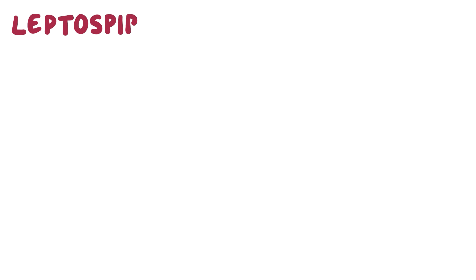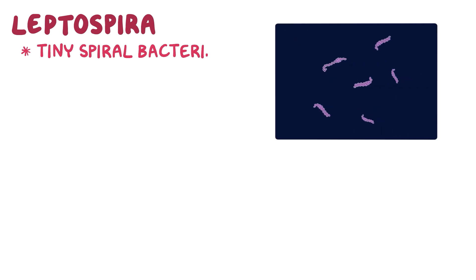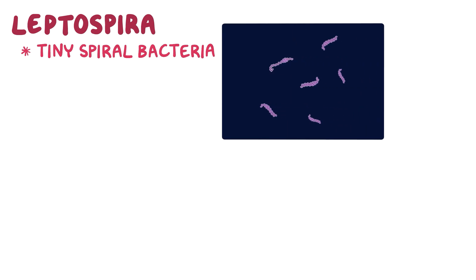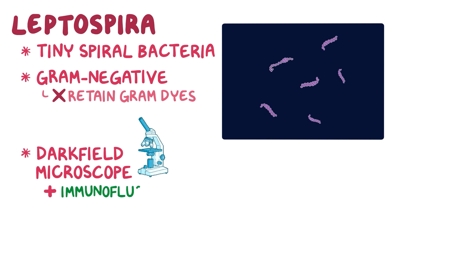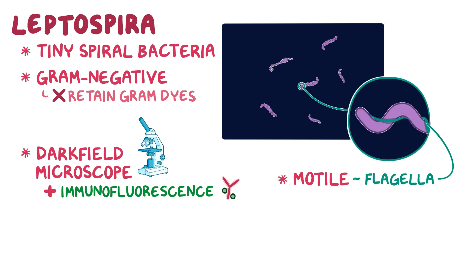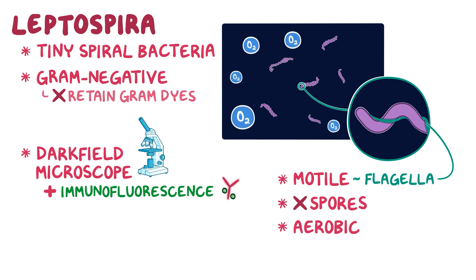Leptospira is a tiny spiral bacteria that stains poorly with gram staining because it doesn't retain the gram dyes well, so it's classically considered gram negative. It's also too tiny to be seen with a light microscope, so you need a dark field microscope with the use of immunofluorescence. Leptospira is also a modal bacteria because it has a flagella that helps it move around. Finally, it doesn't form spores and it's aerobic, meaning it needs oxygen to grow.